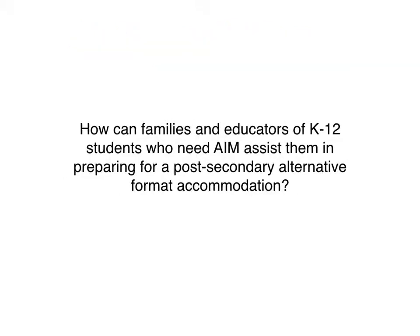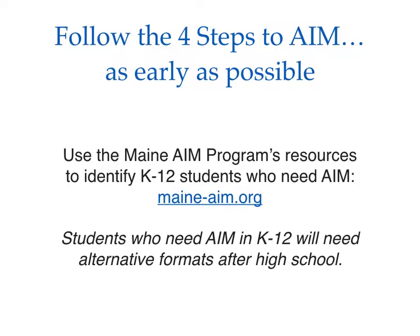So the question becomes: how can families and educators of K-12 students who need AIM assist them in preparing for a post-secondary alternative format accommodation? First, if you haven't already, follow the four steps to AIM to determine students' needs. The Maine AIM program has numerous resources and offers free technical assistance to families and schools. The website is maine-aim.org. This is a critical first step because students who need AIM in K-12 will need alternative formats after high school.